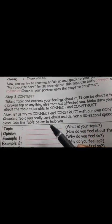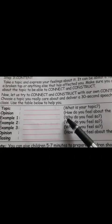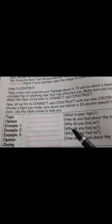Choose a topic you really care about and deliver a 30-second speech to your class. Use the table to help you. First, select your Topic. Then Opinion — how do you feel about the topic? Then give Example 1, Example 2, and Example 3 — why do you feel that way? Finally, finish with your Opinion again and your Closing — say thank you. Give children 5 to 7 minutes to prepare. Children should not write the speech — they should focus on all three steps.